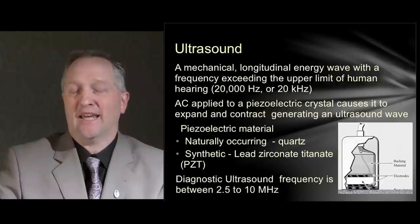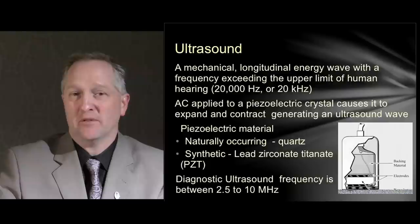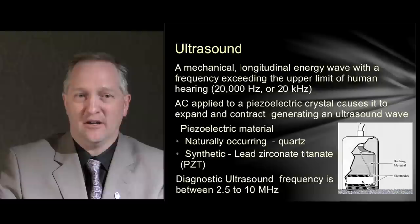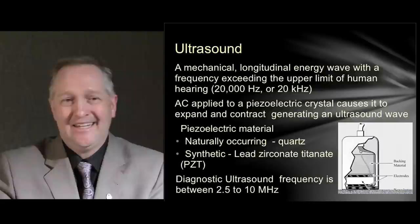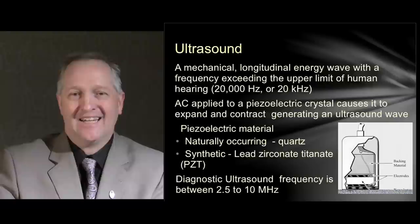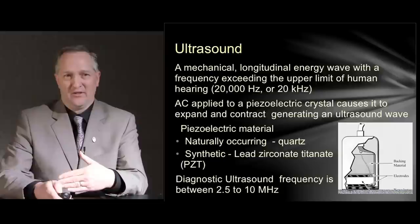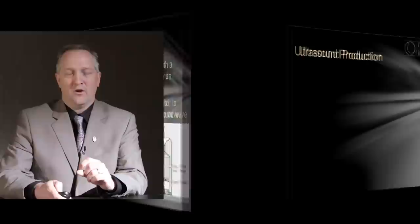Now let's move into ultrasound. Ultrasound is the exact same thing — a mechanical longitudinal energy wave — with a frequency exceeding the upper limits of human hearing. Human hearing is roughly 20,000 hertz or 20 kilohertz. Ultrasound is produced when electricity is applied to crystals, causing them to vibrate and create a cycle. The crystals are located in the probe head of an ultrasound scanner. The frequency these crystals achieve is between 2.5 and 10 megahertz — far above the 20 kilohertz upper limit of human hearing.